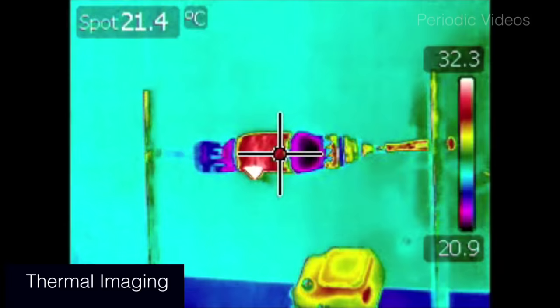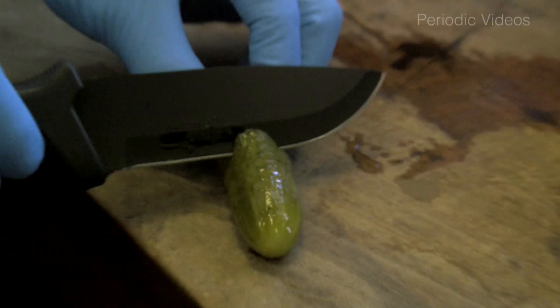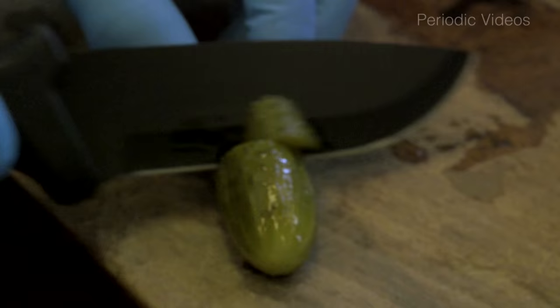You can see that it really is heating up and you can see that the end where the light is coming from gets much hotter than the other end. We then thought that it would be interesting to try and increase the resistance of the middle of the gherkin.